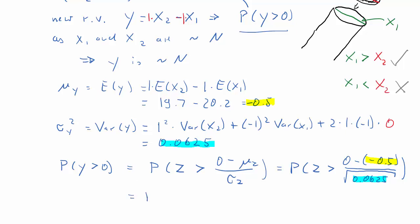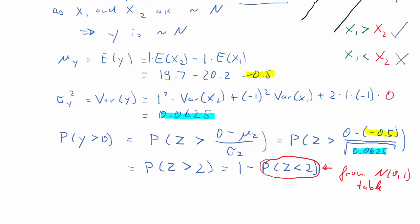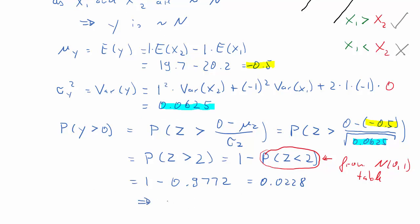So this is our standardized value, for which we need the probabilities. That's equal to the probability of Z being larger than 2, and that's the same as 1 minus the probability of Z being smaller than 2, because we know these type of probabilities we can read off from a standard normal distribution table. That probability is 0.9772, and therefore the probability we are interested in is 0.0228.